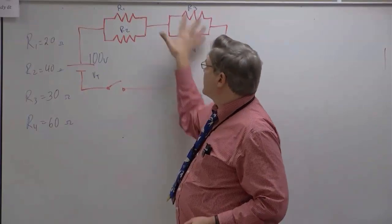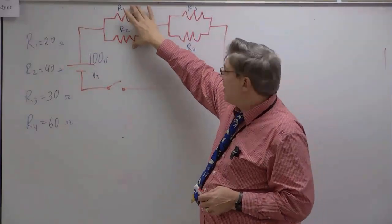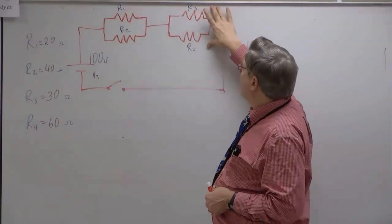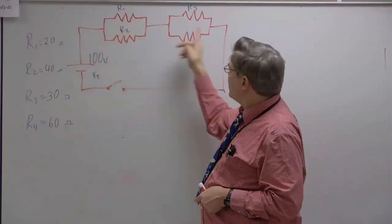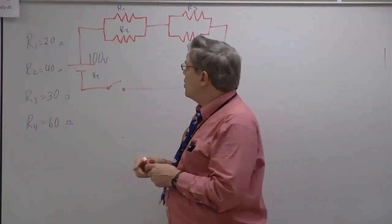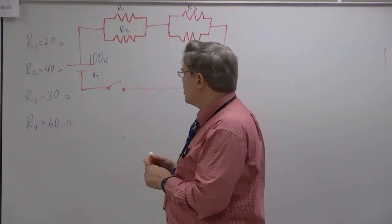So the first thing I'm going to do is identify what we've got up here. I've got a pair of resistors in parallel, and I have another pair of resistors in parallel, and those two pairs are in series with each other. So let's first work out what we can about the first pair of resistors, R1 and R2.